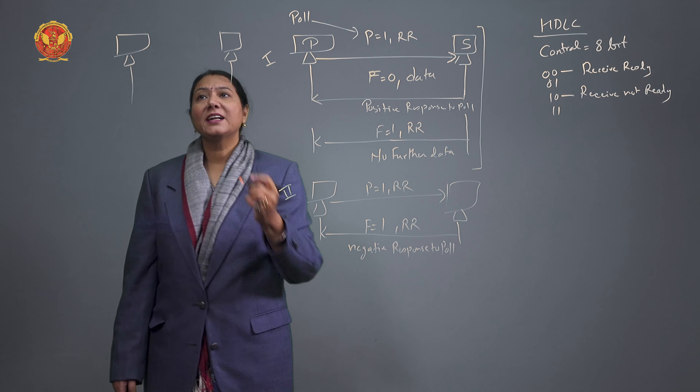In the second condition, suppose the primary polls the secondary again using P=1 with RR, but the secondary has no data to send. In this case, the secondary sends a negative response to the poll: it uses RR with F=1 set in the control information (bits 00 for RR, F=1). This indicates a negative response — meaning the secondary has no data available.